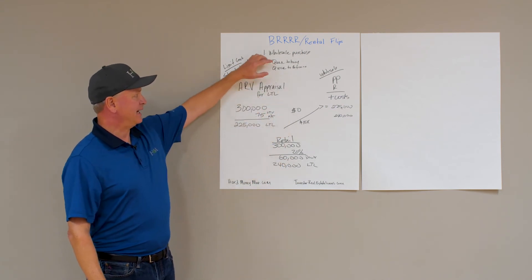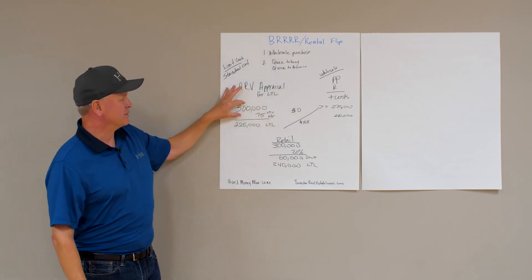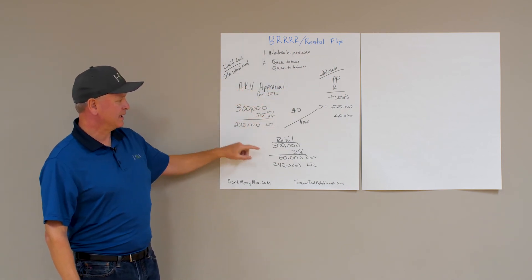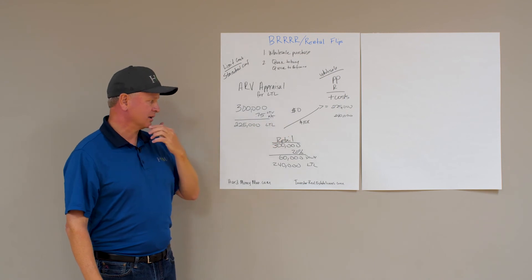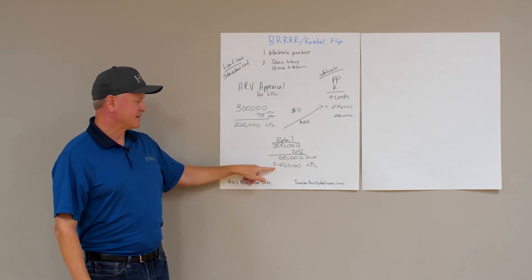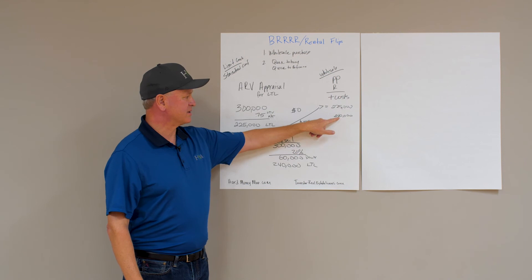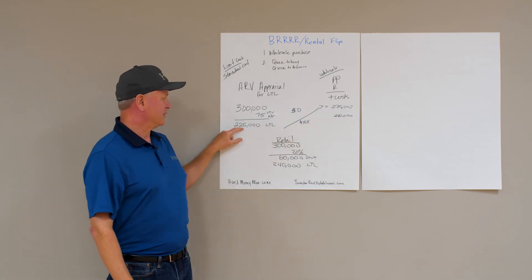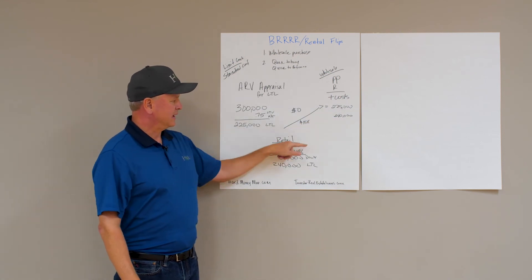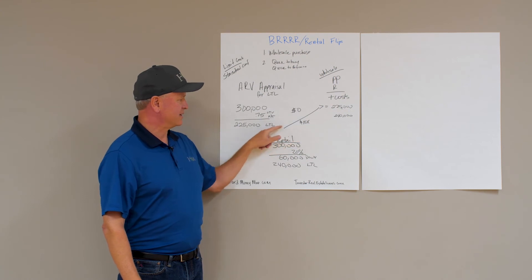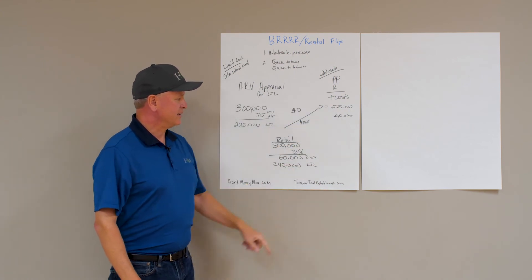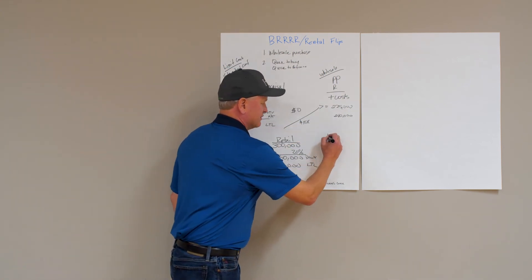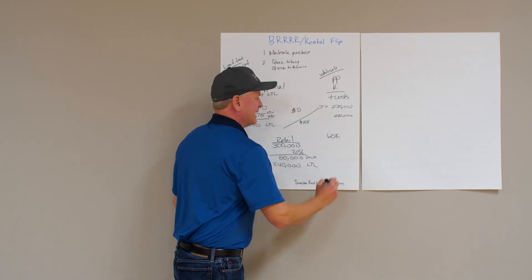Up here, by buying something at wholesale and using the appraised value, we're able to get into these properties with zero or little money in. If you contrast these two, even at $240,000 all-in, if you have a loan for $225,000 and $15,000 cash into it, you still have $60,000 in created equity.